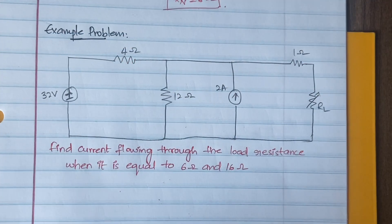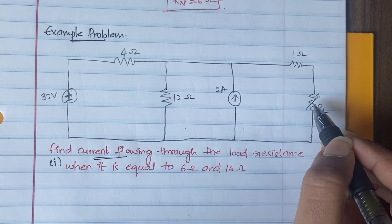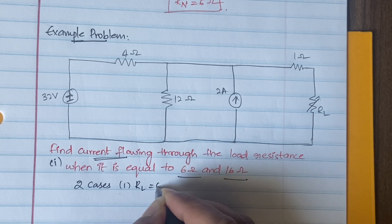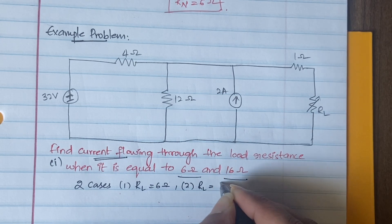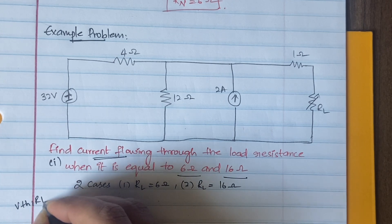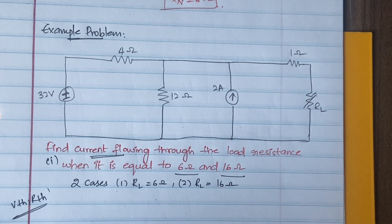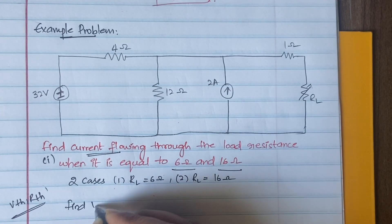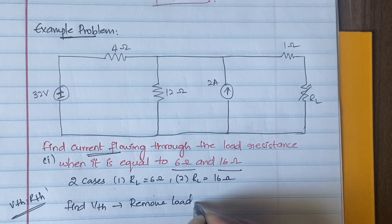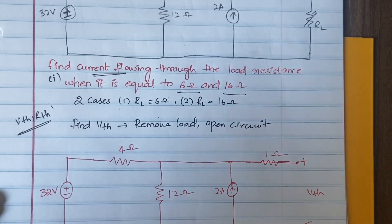Let's go into the example problem. The question is to find the current through the load resistance RL when it is equal to 6 ohms and when it is equal to 16 ohms — two cases. First you have to find VTH, then find RTH, and replace the big circuit with an equivalent circuit having only VTH, RTH, and RL. For VTH, you first remove the load and open-circuit those terminals.